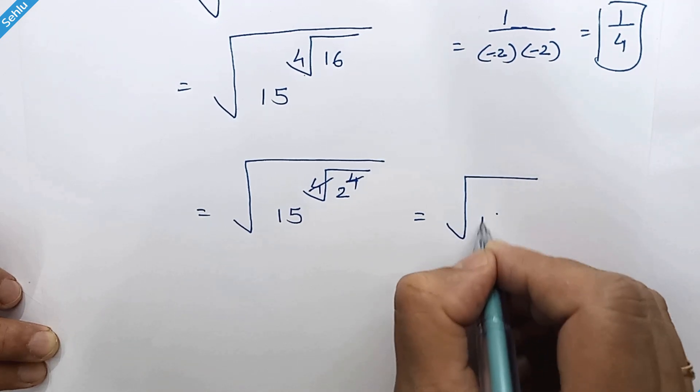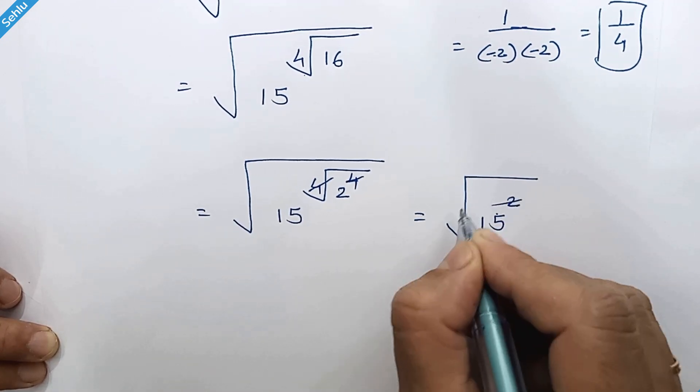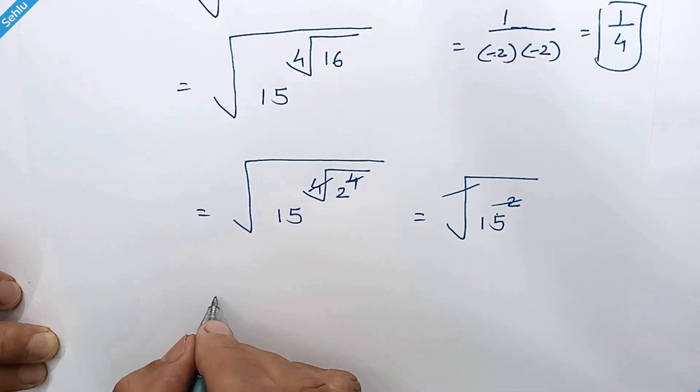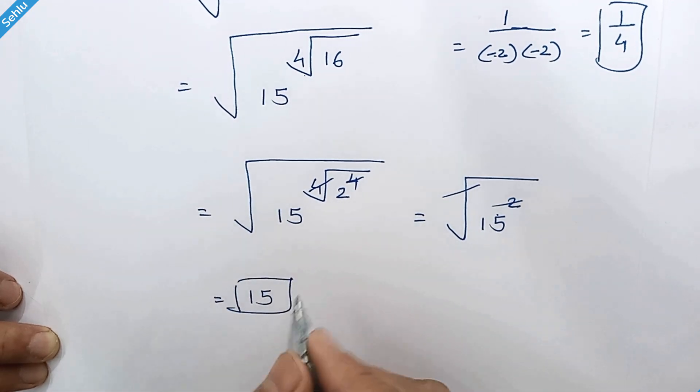Now we have square root of 15 square. Square and square root get cancelled out. So 15 is our answer.